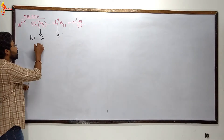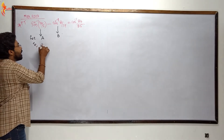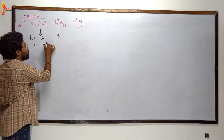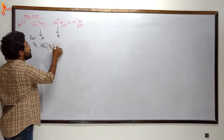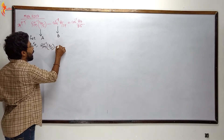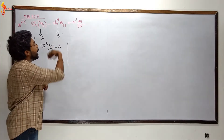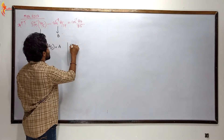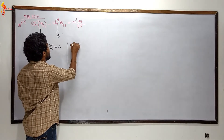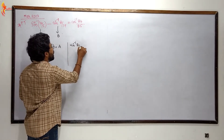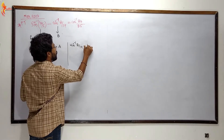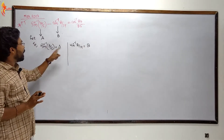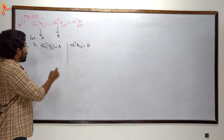Let sin inverse of 3 by 5 equal to a, and sin inverse of 8 by 17 equal to b. This is the sum — we are working with a minus b.